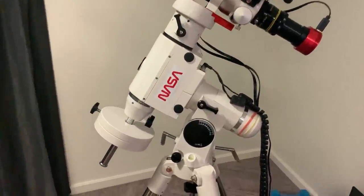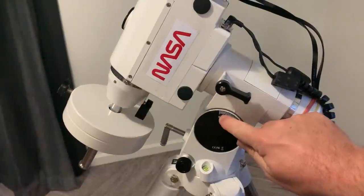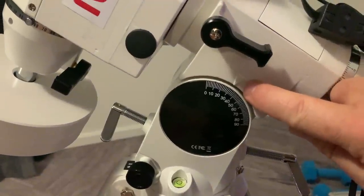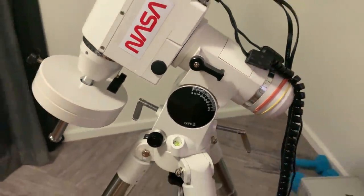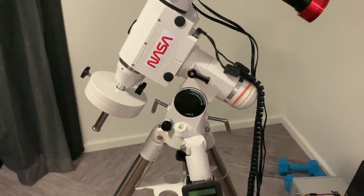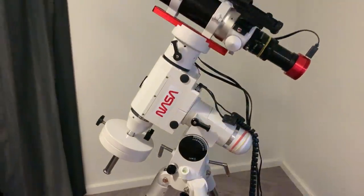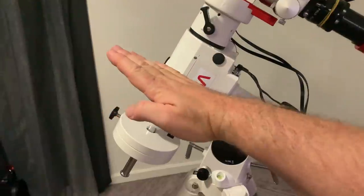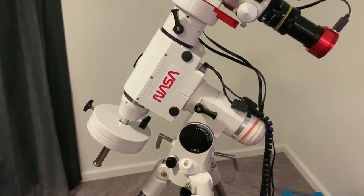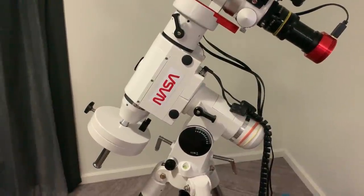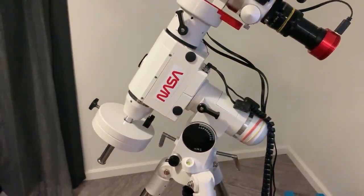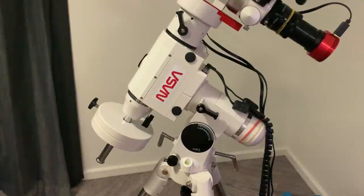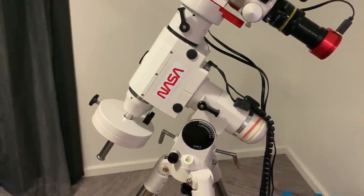And that is why an equatorial mount will have a latitude scale. Here you can see the indicator is close to 32 degrees, because I'm almost at exactly 32 degrees south latitude in my present location. And that means this axis is actually aligned with the Earth's rotational axis. And when it rotates, it is compensating precisely for the Earth's rotation. And that is why the stars will remain fixed in the field of view when doing so.